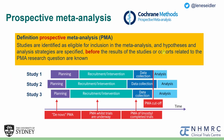So, what is a prospective meta-analysis? In a PMA, studies are included before their results are known. So in this example below, the three studies need to be included in the PMA before their analysis.